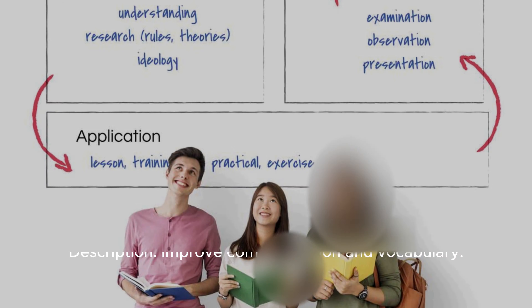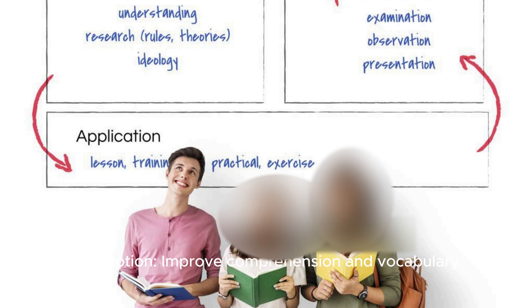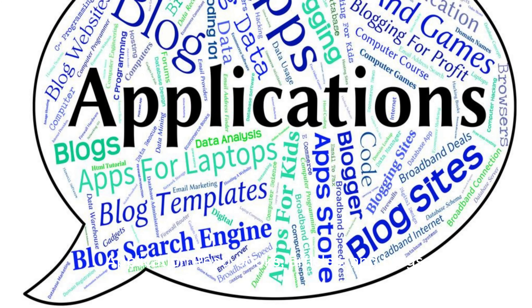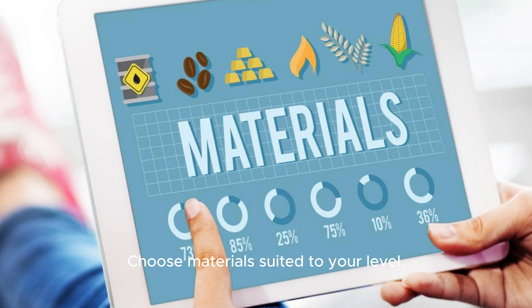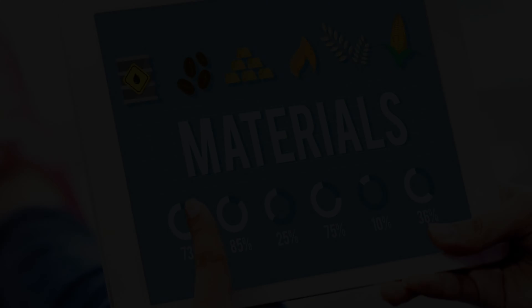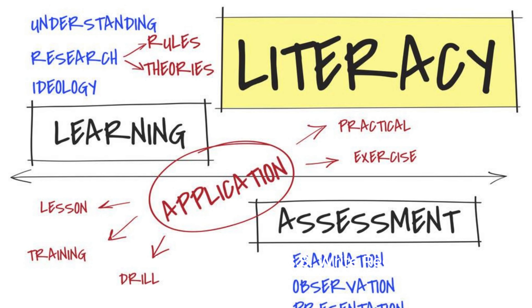Tip 7: Read extensively. Improve your comprehension and vocabulary. Read books, articles, and blogs. Choose materials suited to your level and annotate unfamiliar words.